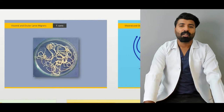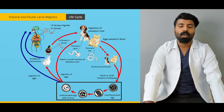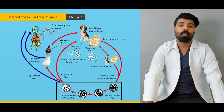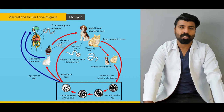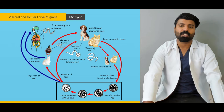In this lecture, we're going to start with visceral and ocular larva migrans of T. canis. We're going to talk about what they look like, and afterwards we're going to talk about the life cycle. We're going to talk about how they reach the human body, how they reach the human tissue, and since the human is not their definitive host, why they enter the human body and what the consequences are.